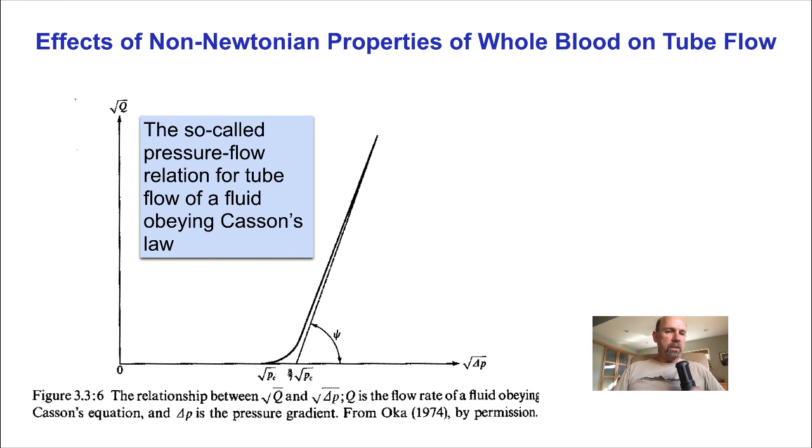There are some interesting consequences of the Casson fluid-like behavior of whole blood. For example, in a tube flow, a finite pressure, shown here as PC, is required in order for blood to start flowing. Here, the pressure flow relation is plotted as the square root of flow versus the square root of pressure.